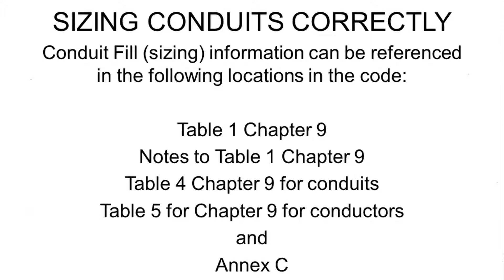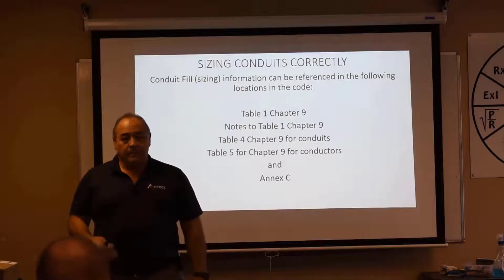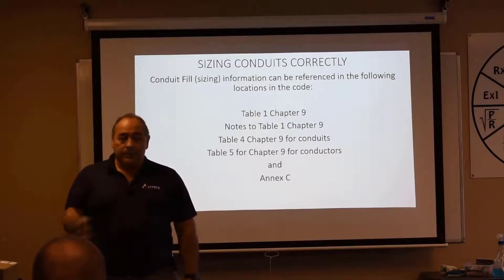Here's our layout of what we've got. We've got Table 1, Chapter 9 that gives us our information. We've got Notes to the Table, Chapter 9, Table 1. Then we've got Table 4 and 5. This is the interior size of the conduit and the exterior size of the conductors — how many can we physically fit? We've got NXC, which is great if all the conductors are the same size and we've got the same conduit or raceway for the entire length.